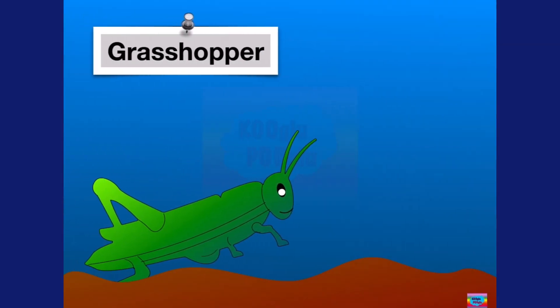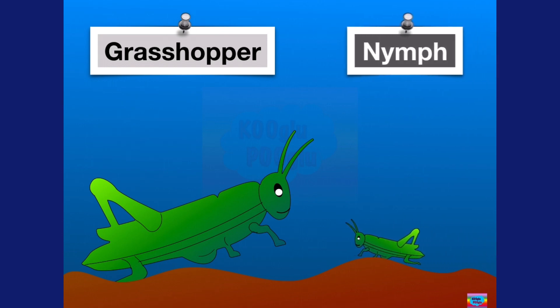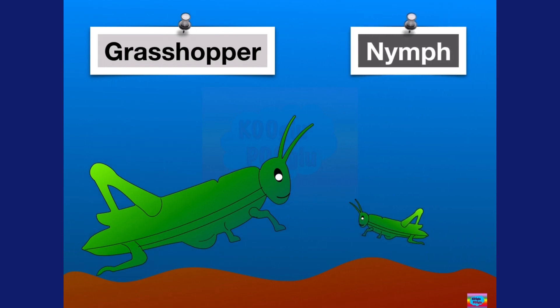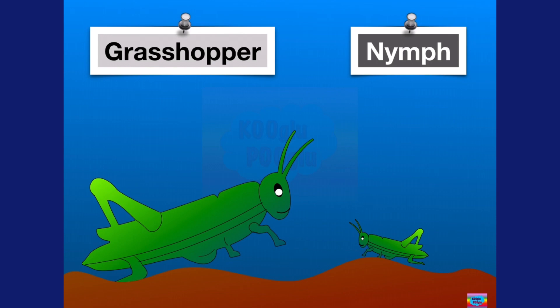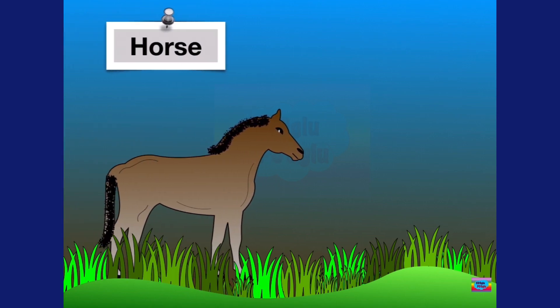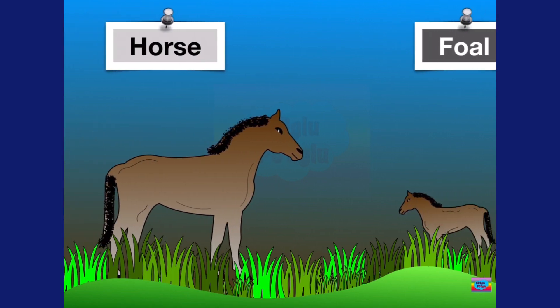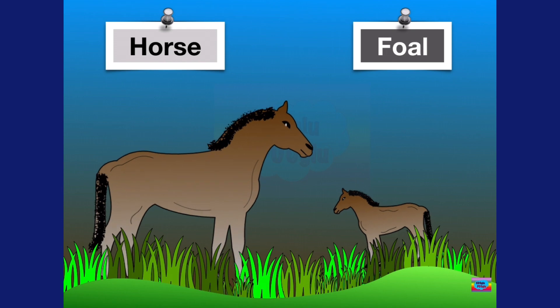Here we have a grasshopper, and a baby grasshopper is called a nymph. Now we have a horse, and a baby horse is called a foal.